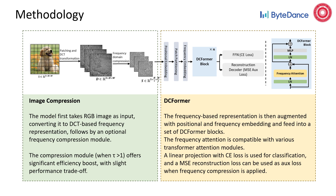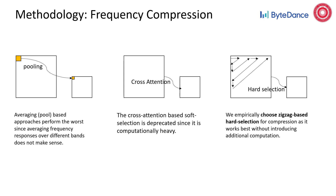The frequency attention is compatible with various transformer attentions, including Swin attention, neighbor attention, and others. A linear projection with cross-entropy loss is used for classification, and MSE reconstruction loss is used as an auxiliary loss when frequency compression is applied. We study several frequency domain compression strategies and empirically choose the zigzag-based hard selection for compression, as it works best without introducing additional computational cost.